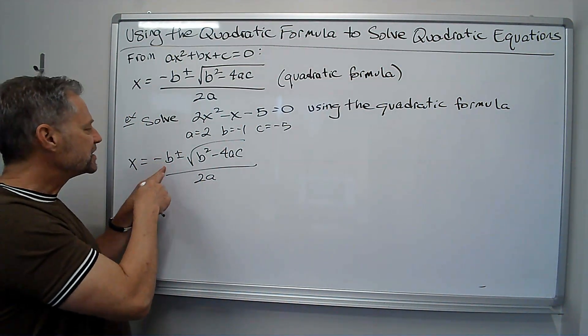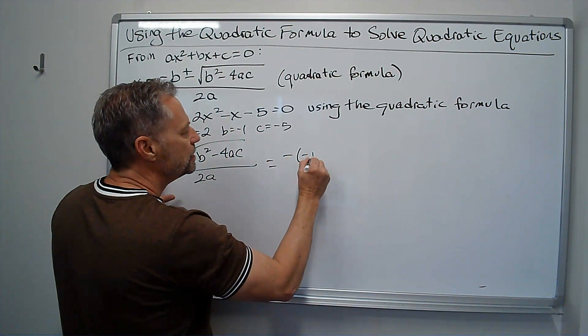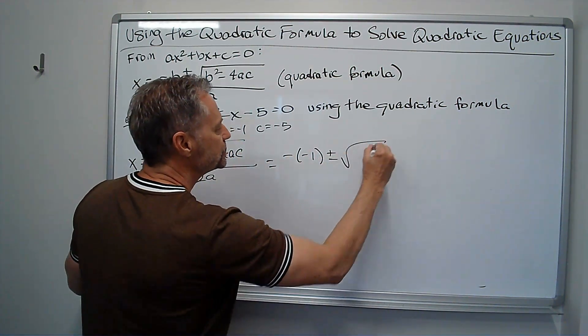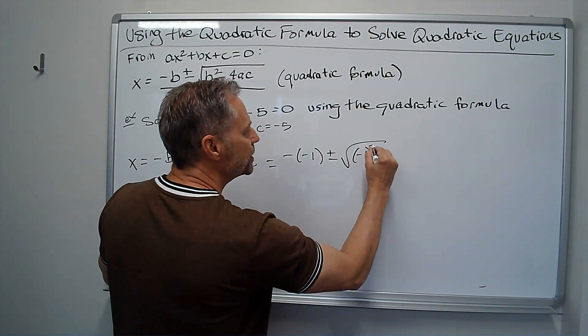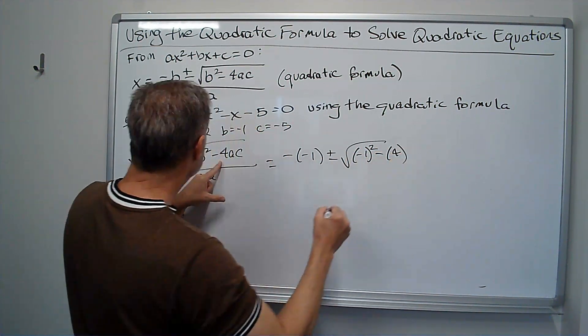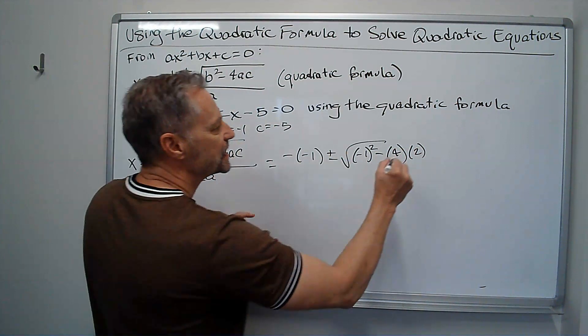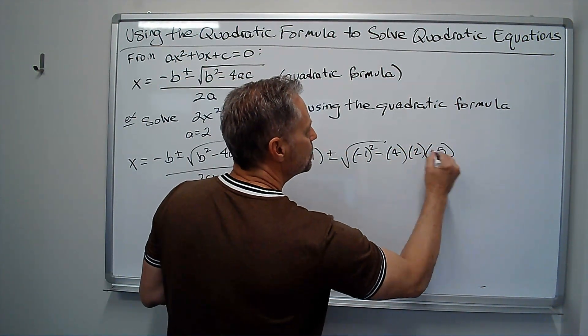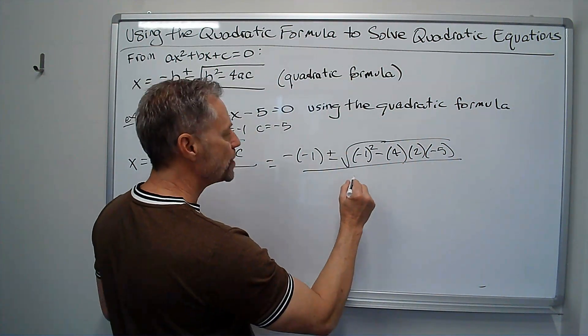Okay, so now I just plug things in. Now notice b is negative 1, so I go the opposite of negative 1, plus or minus the square root of b squared, which is negative 1 squared, minus 4 times a, which is 2, times c, which is negative 5. All over 2a, 2 times 2.